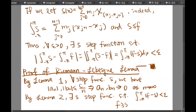Indeed, the integral of s from negative pi to pi is equal to the Darboux lower sum from the previous page. And also, we see that s should be smaller than or equal to f because the m_j taken here is the infimum of f over the interval [x_j, x_{j+1}]. Thus, we get that for all epsilon greater than zero, there is a step function such that the integral from negative pi to pi of f minus s is indeed smaller than epsilon.